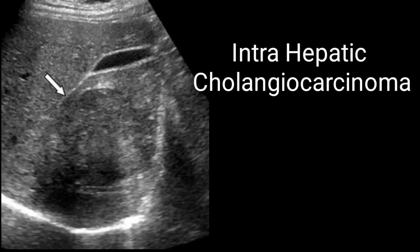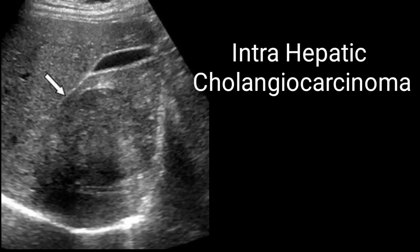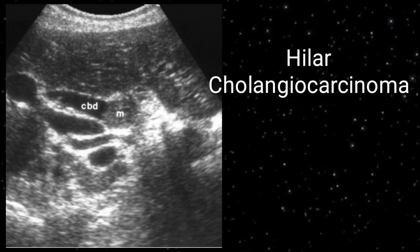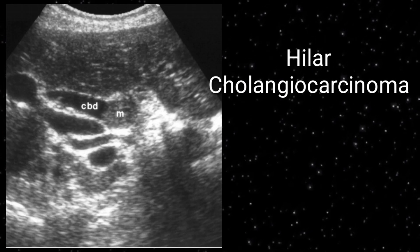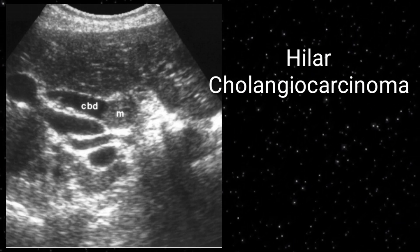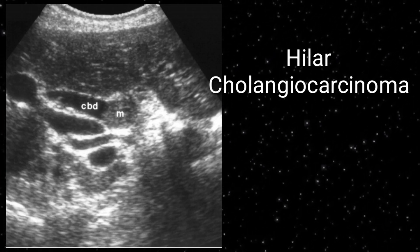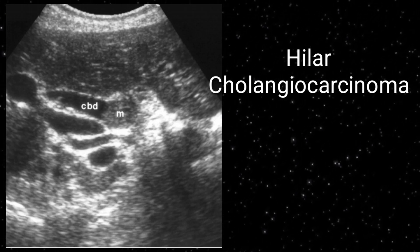On this image, you can appreciate a well-defined hypoechoic round mass in the right lobe of the liver — this is an example of intrahepatic cholangiocarcinoma. To differentiate from hepatoma or hepatocellular carcinoma, look for biliary channel dilatation: if the biliary channels are dilated, it is likely cholangiocarcinoma; if not dilated, consider hepatoma or HCC. Another classical example shows a well-defined hypoechoic mass at the hilum of the liver — this would be hilar cholangiocarcinoma. Measure the size, mention the echotexture and location, and report it as a hilar hypoechoic mass, likely cholangiocarcinoma.